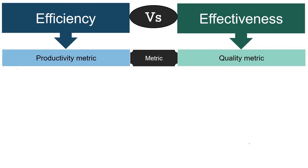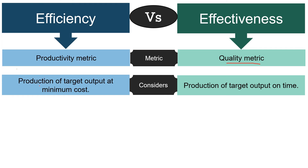While efficiency is a productivity metric, effectiveness is a quality metric. This is because effectiveness implies attainment of organizational goals or completion of a task in a timely manner without considering cost. In contrast, efficiency means achievement of organizational goals with the best possible utilization of resources and zero wastage at minimum cost. Efficiency takes into account the production of target output at minimum cost, while effectiveness takes into account the production of target output on time. So efficiency focuses on cost-benefit analysis, while effectiveness focuses on the time factor.